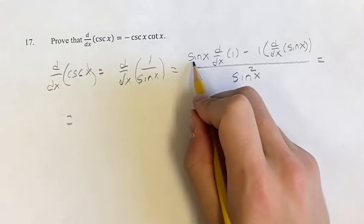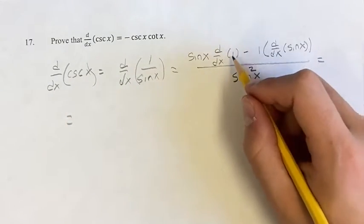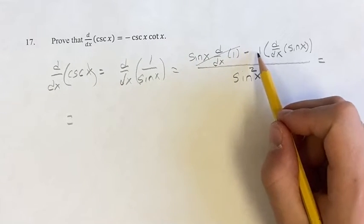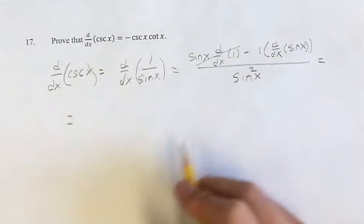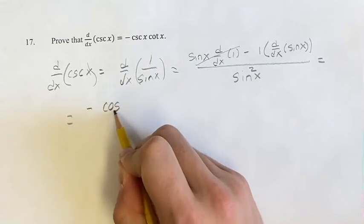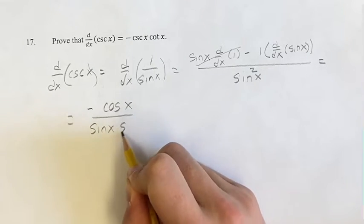So this is equal to sine x times the derivative of 1. The 1 is a constant, so its derivative is 0, so this entire term is 0. Then we have minus 1 times the derivative of sine is minus 1 times cosine, which is just negative cosine x over sine squared x. We can write as sine x, sine x.